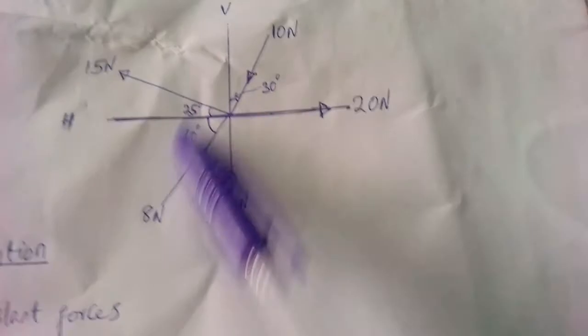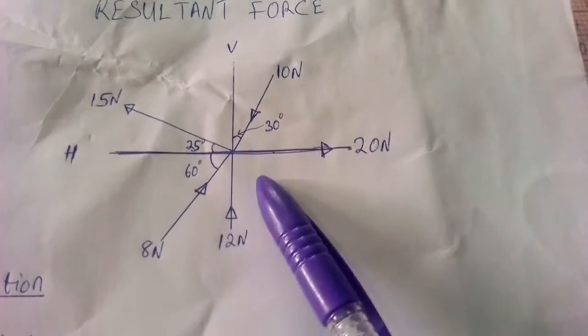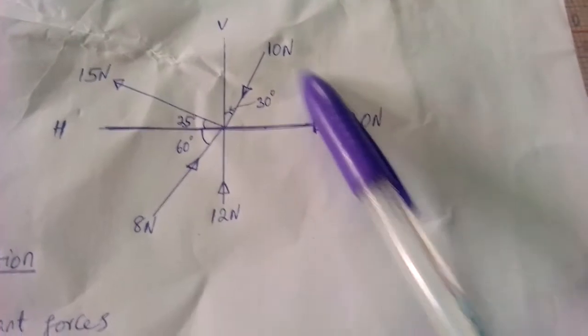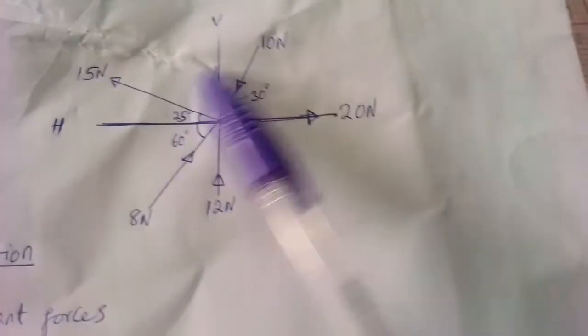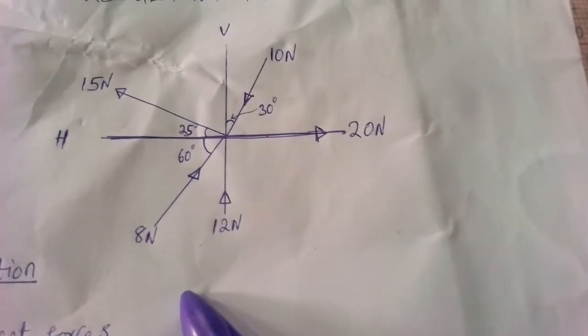We want to transfer this diagram to our graph. But before we can do that, we have to convert all these forces into distance. Let's assume that for every 5 Newton we are using 1 cm.